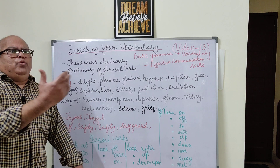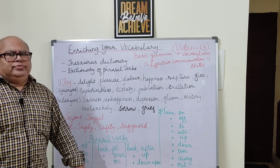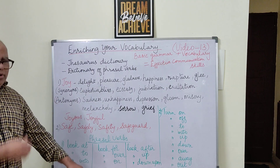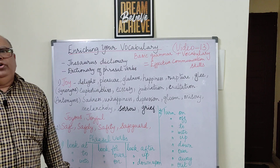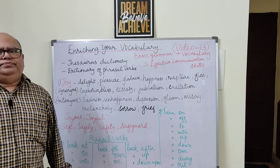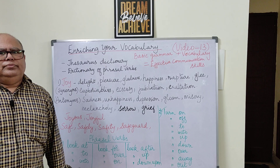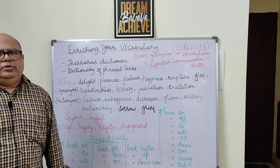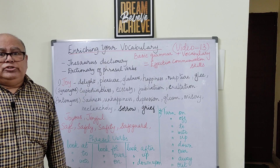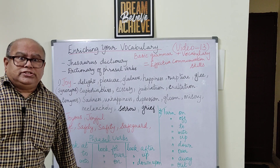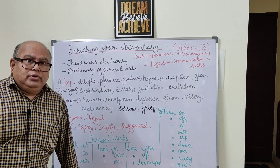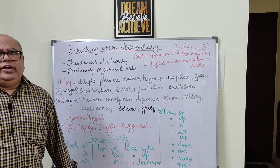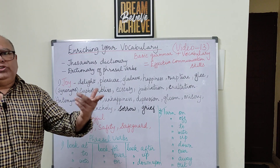'Look over' — my house is looking over the sea, meaning it has a sea view. 'Look on' — to passively watch without doing anything. There was a fight going on between two people in the street; I was scared to go near them, so I was just passively looking on, peeping through the window — like an onlooker or watcher.